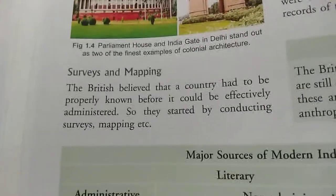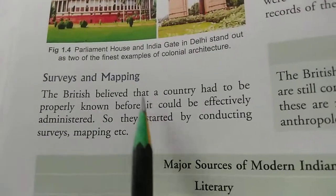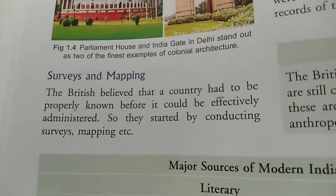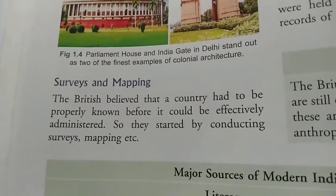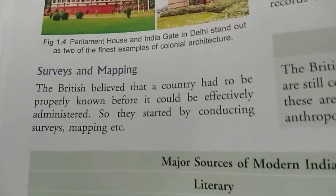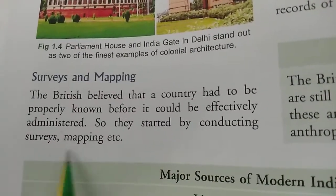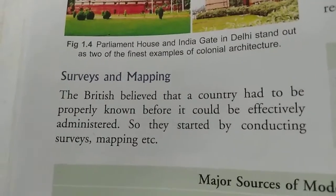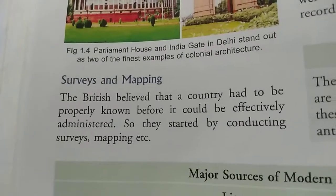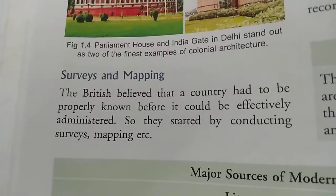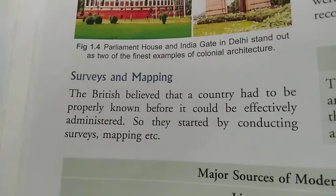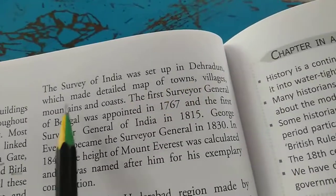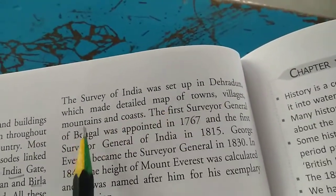The last topic of the chapter is surveys and mapping. The British believed that a country had to be properly known before it could be effectively administered, so they conducted surveys and mapping. The Survey of India was set up in Dehradun, which made detailed maps of towns, villages, mountains, and coasts.